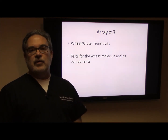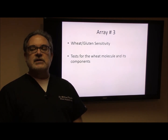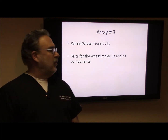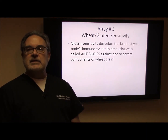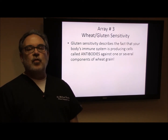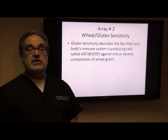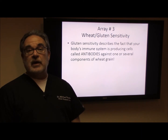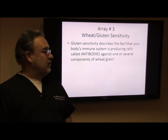The other test we run is Array 3. In this test we are basically looking for wheat and/or gluten sensitivity. The normal tests that most people run only test for one component of the wheat molecule. This test specifically tests for over 20 different types of the wheat molecule. It's more than just the gliadin-type IgA, which is the only test usually run when you go to your doctor and are told you're not gluten sensitive. So we check all the components of the wheat molecule to see where and if your body is gluten sensitive.